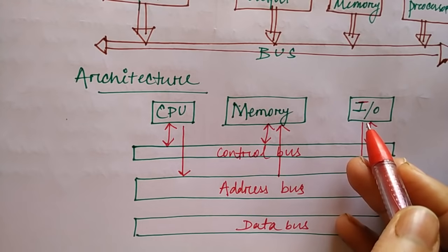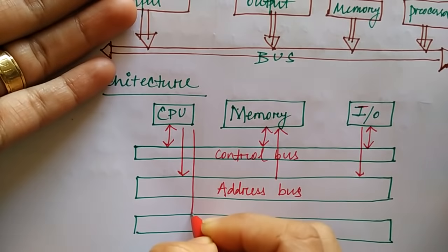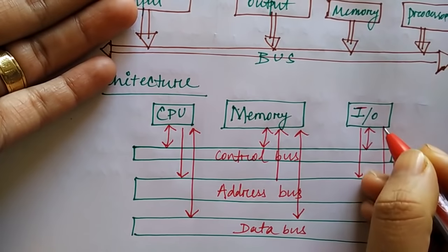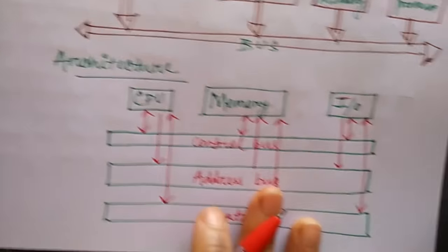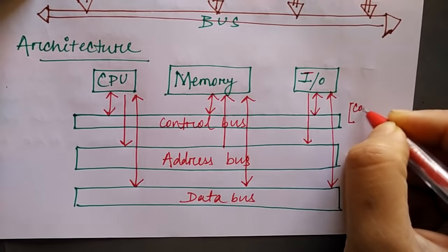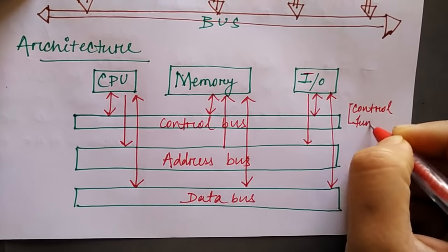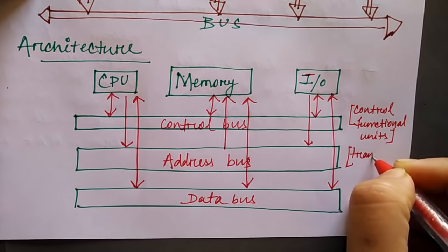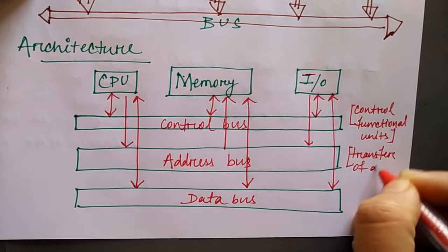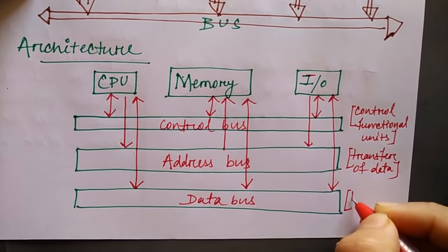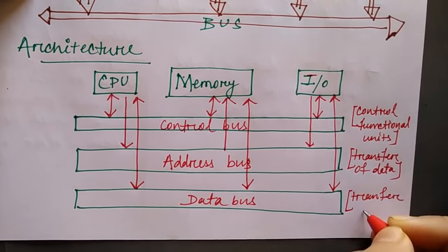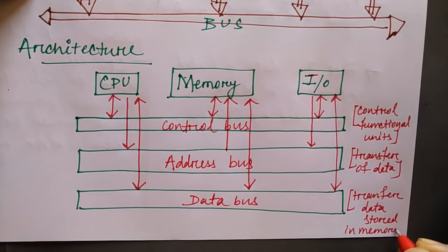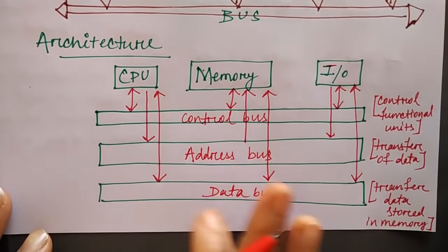The data bus is also bidirectional — we can store data from the CPU to memory, from memory, and also from the input-output device. So the main purpose: the control bus is used to control the functional units, the address bus is used to transfer the address of data, and the data bus is used to transfer the data stored in memory. These are the 3 basic operations by the help of the bus architecture.